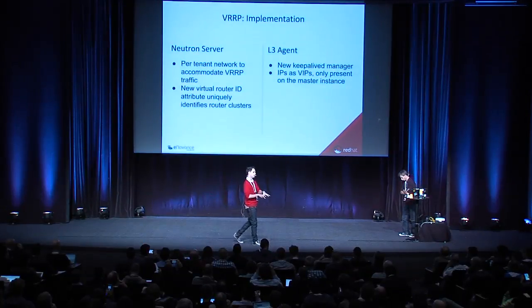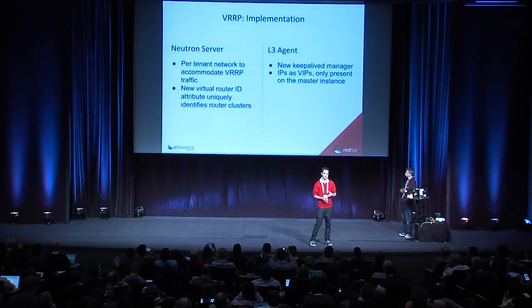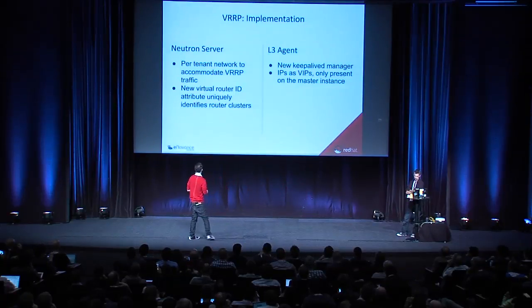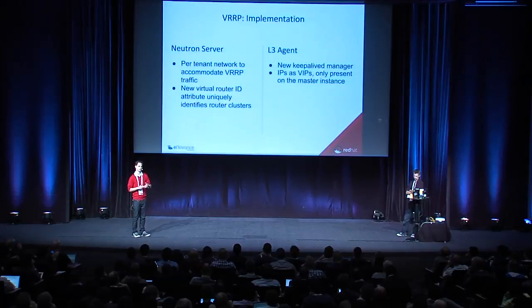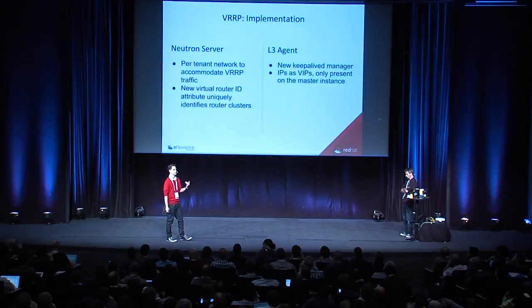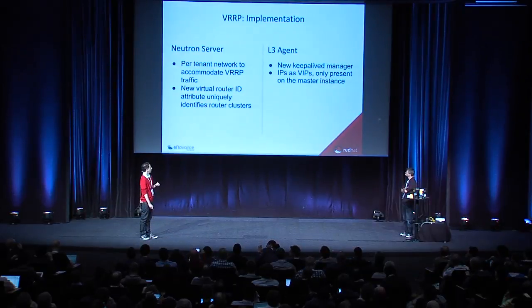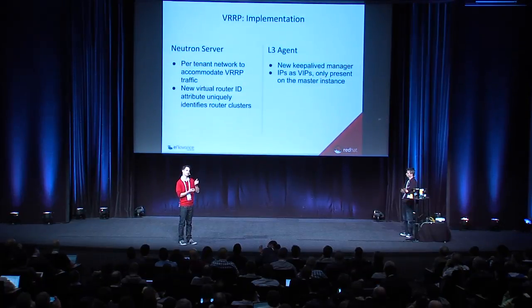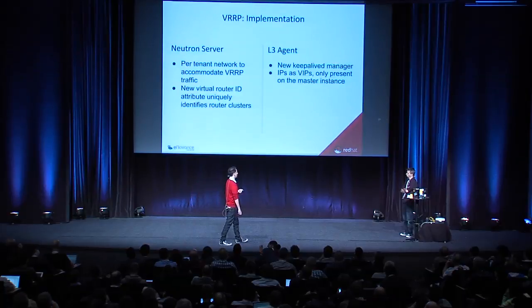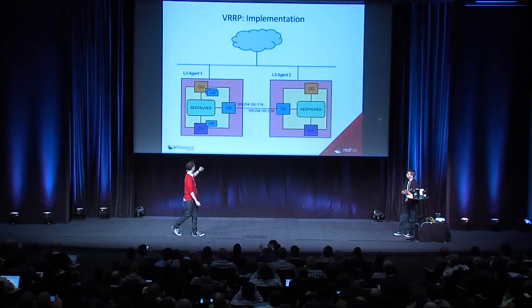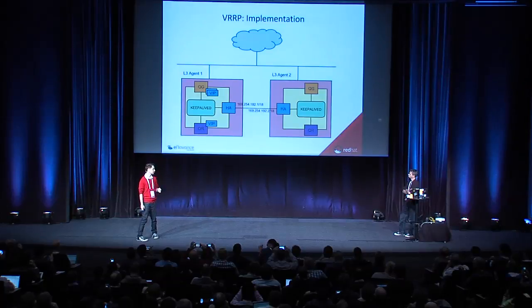Going deeper into the details: we made changes to the server and to the Layer 3 agent. For the server, we create a VRRP network, and each router instance gets a unique HA port inside that network to send and receive VRRP traffic. For the agent, we manage a KeepAlive D process per router. We have two agents — the left one is the active instance and the right one is the backup. There is a unique KeepAlive D process on both agents.